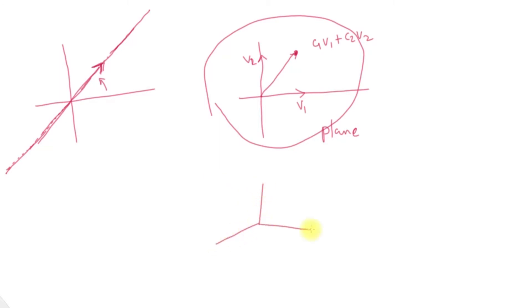If we have three vectors, we will span a three-dimensional space. In three-dimensional space, we will span a three-dimensional space.